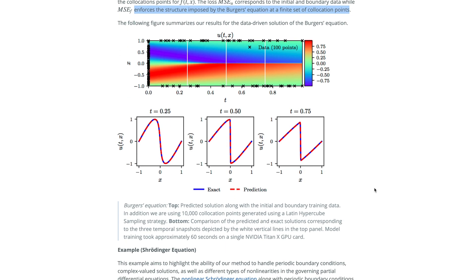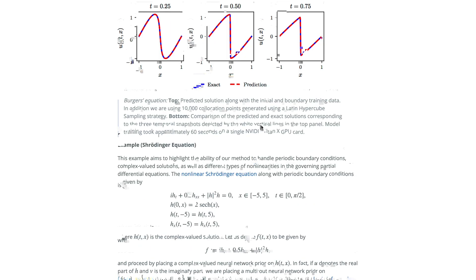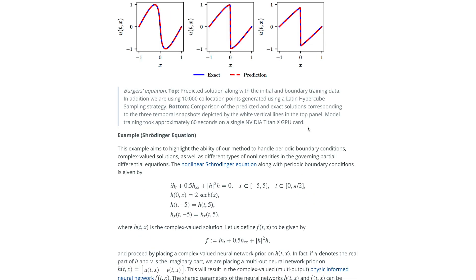When you do this, the exact results — the actual solution to the equation versus the prediction from the model — are pretty much the same thing. The training for this is also pretty fast: it took about 60 seconds on a single GPU card, which is not your average laptop, but when it comes to machine learning research is still pretty fast.